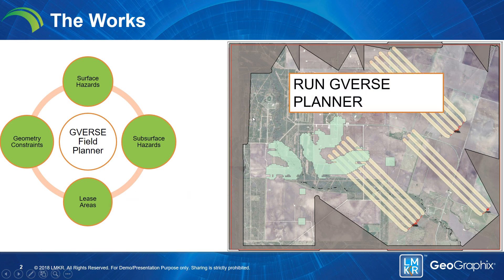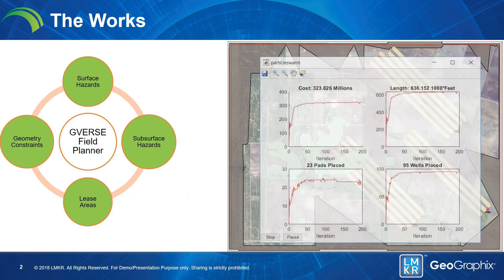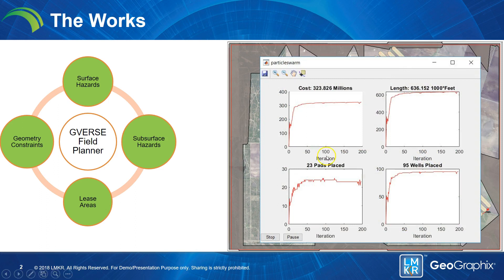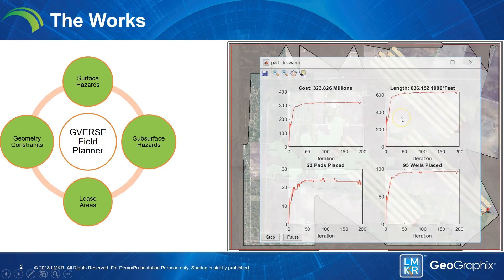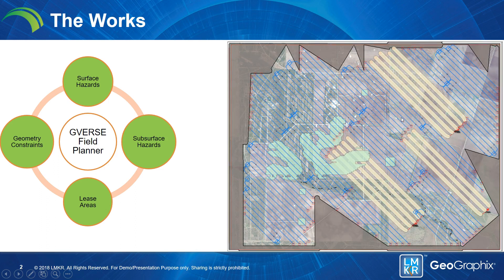If we take all of these into account and run G-Verse Field Planner, what we get is this graph. As simulations run, the more iterations that take place, the better the results — you get to see the cost of the wells go up because more wells are placed. In this example, we'll have 95 placed wells, and once we reach the conclusion, you see something like this.